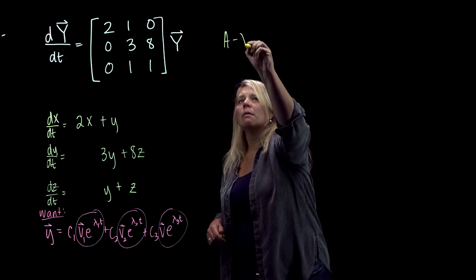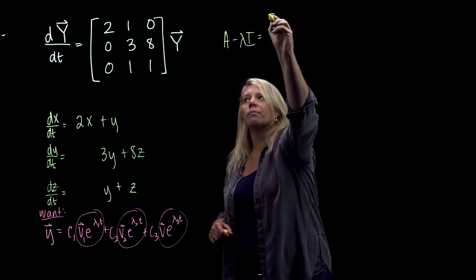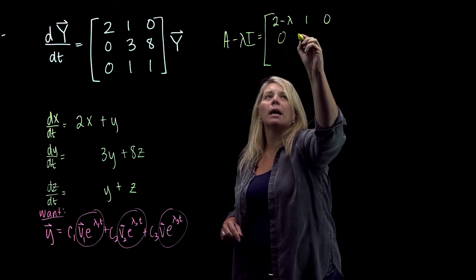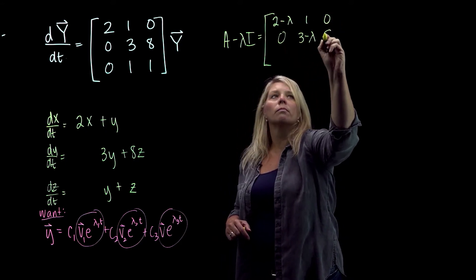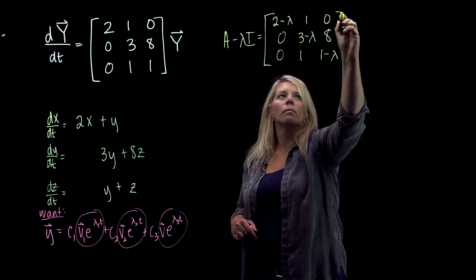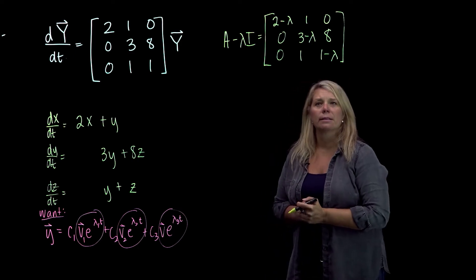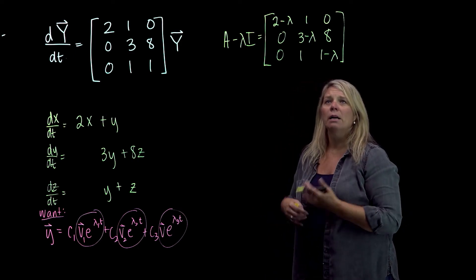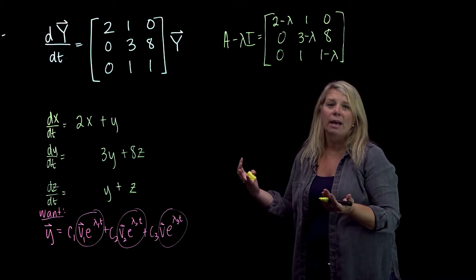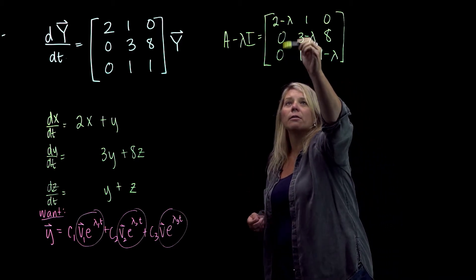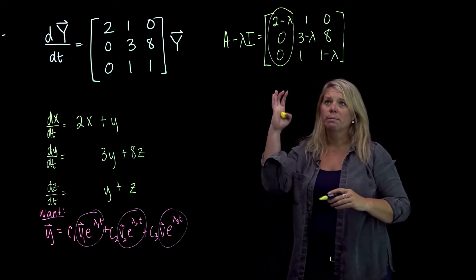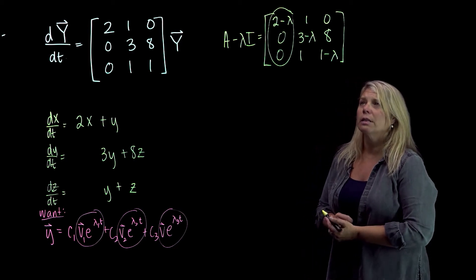Alright, so A minus lambda I, I'm just going to be subtracting lambdas on the main diagonal, and then I'm going to take the determinant of this and set that equal to zero and solve for lambda. Be smart about finding that determinant in a way that makes life easy for you. Notice that you've got a lot of zeros in this first column. So if I expand that determinant by expansion along that first column, that's going to be the easiest way to do this.